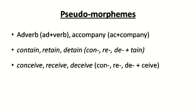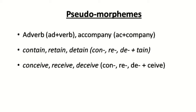Pseudo-morphemes: as we know there are many borrowed words in English, and very often borrowed words get assimilated in English. Some prefixes of borrowed words are considered morphemes in the original language but not in English. For example, 'adverb', 'accompany' — these prefixes do not create new words in modern English; they are pseudo-morphemes. Similarly, examples like 'contain', 'retain', 'detain', 'conceive', 'receive', 'deceive' follow the same principle.